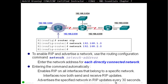RIP advertises the specified network and sends RIP updates every 30 seconds. For example, on Router 1 we enter router configuration mode by typing Router RIP. The first command is network 192.168.1.0 — Router 1 will start sending and receiving updates on that link. The second command is network 192.168.2.0. Even though it's classless, we must enter it as classful, and it will start sending and receiving updates on that link as well.